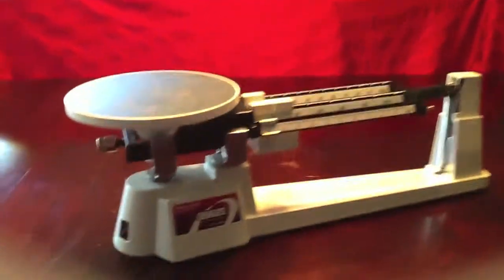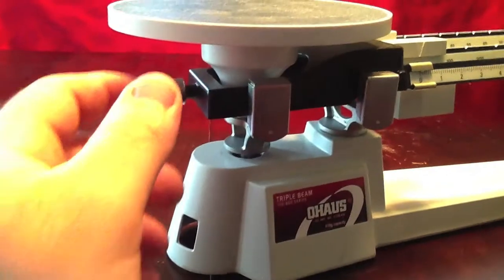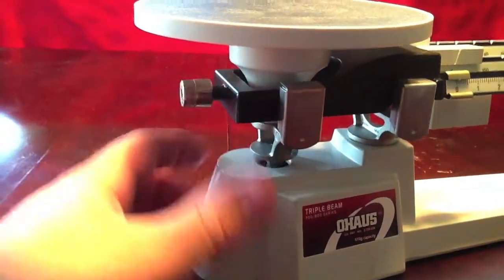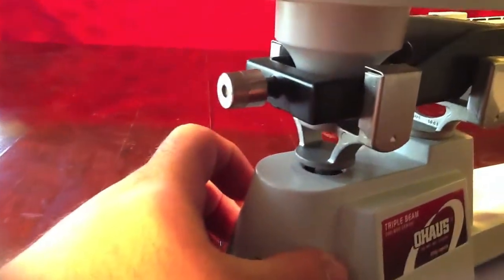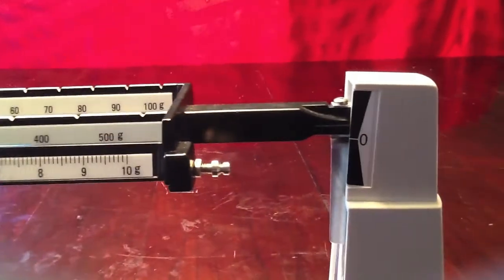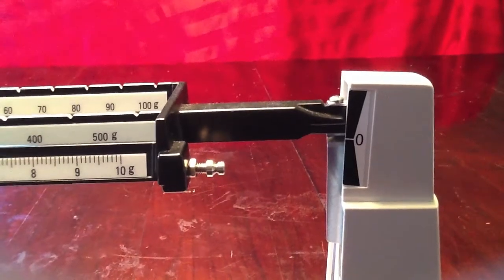To zero our balance, we are going to turn this adjustment knob until our arrow lines up with zero.